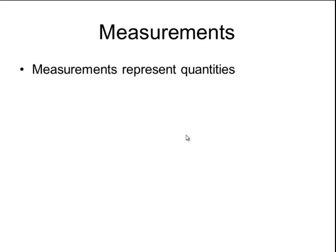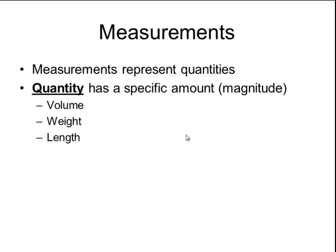Normally numbers come from measurements, and measurements represent quantities. Quantity is something that has a very specific amount, or sometimes instead of the word amount we use the word magnitude. Volume would be a specific quantity, weight, or length would also be specific quantities.